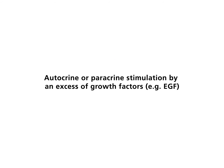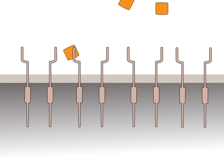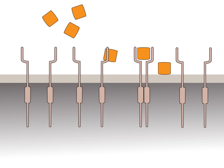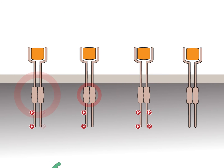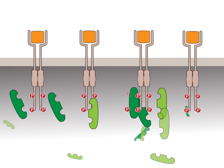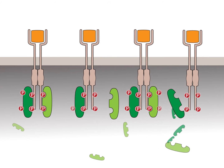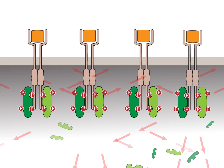Autocrine or paracrine stimulation by an excess of growth factors — for example, EGF. Receptors are exposed to an increased concentration of growth factors that are produced either by the tumor cell itself or by adjacent cells. Since a higher number of receptors are occupied, the cytoplasmic signals are more intense when compared to the situation in normal tissue.